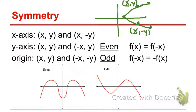For even functions, that means it has y-axis symmetry. Something like this graph where there's a point at maybe (2, 0), and then there's a point over here at (-2, 0). So for every point (x, y) there's a (-x, y), meaning every point has the same y value but opposite x value. If you plot all those points, it would have symmetry over the y-axis — you could fold it right over the y-axis and the graphs would overlap.